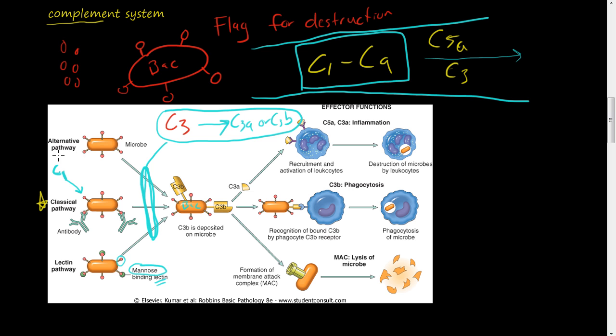In this alternative pathway, this microbe or pathogen will get into the bloodstream. And some of these other plasma proteins will bind, they'll recognize some of the proteins on this microbe. And then they'll bind to it to make this complex, which then will also convert C3 into C3A and C3B. And C3B will be deposited onto this microbe as a flag.